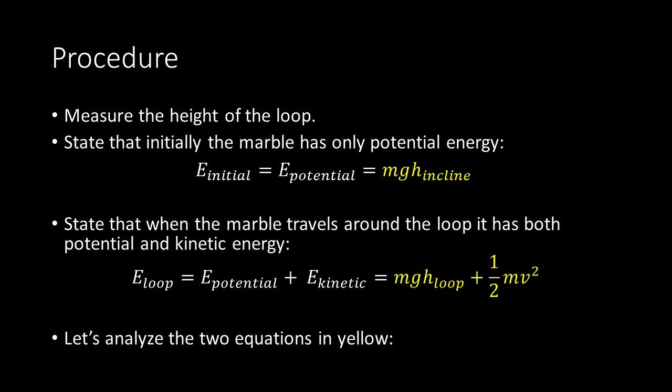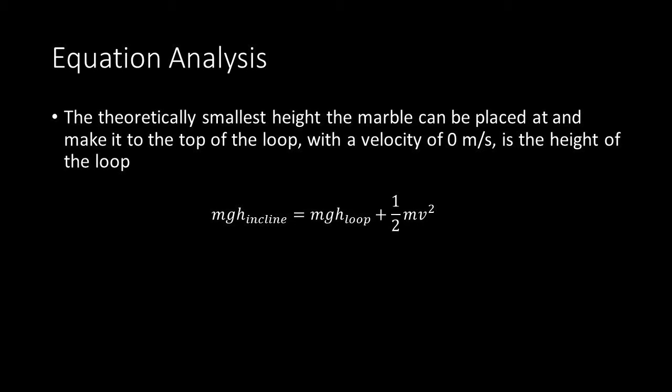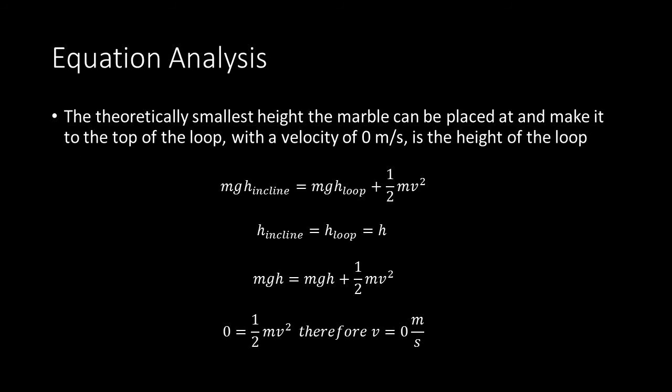Let's analyze the two equations in yellow. The theoretical smallest height the marble can be placed at and still make it around the top of the loop with a velocity of 0 m/s is the height of the loop. Beginning with the conservation of energy: mg times h of the incline equals mg times h of the loop plus 1/2 mv². Setting h of the incline equal to h of the loop as variable h, we get mg·h = mg·h + 1/2 mv². Subtracting mg·h from both sides gives 0 = 1/2 mv², so v = 0 m/s, since the ball has mass.